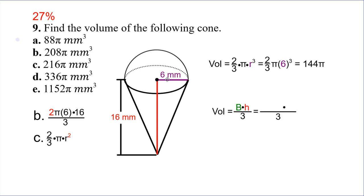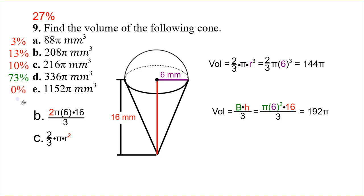For the cone, we take the area of the base, which would be six squared — 36 pi — and multiply that times sixteen divided by three, which gives us 192 pi. Adding the hemisphere and cone together gives our final answer. The mistake I saw if you said B: instead of finding the area by squaring the six, you found the circumference by multiplying the six by two, giving you twelve. So twelve times sixteen divided by three is how you would have gotten answer B. But most of you got this right, so good job.